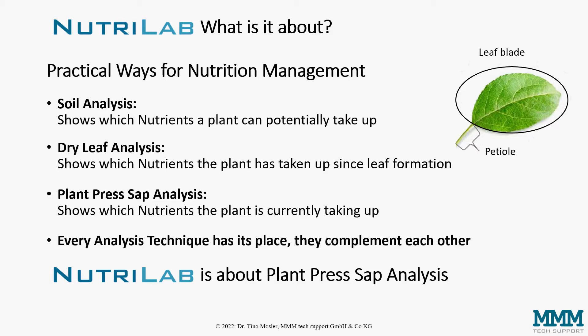Let's first have a look at the practical ways for nutrient management which are common. First of all, there is the soil analysis, which shows which nutrients are available for plant take-up. The dry leaf analysis shows which nutrients a plant has taken up since the formation of that leaf. And the plant press-up analysis shows which nutrients the plant is currently taking up — so this is the most up-to-date, most recent look you can have at the nutritional status of a plant. Every analysis technique has its place; they are complementary to each other. Nutrilab, however, is about plant press-up analysis.